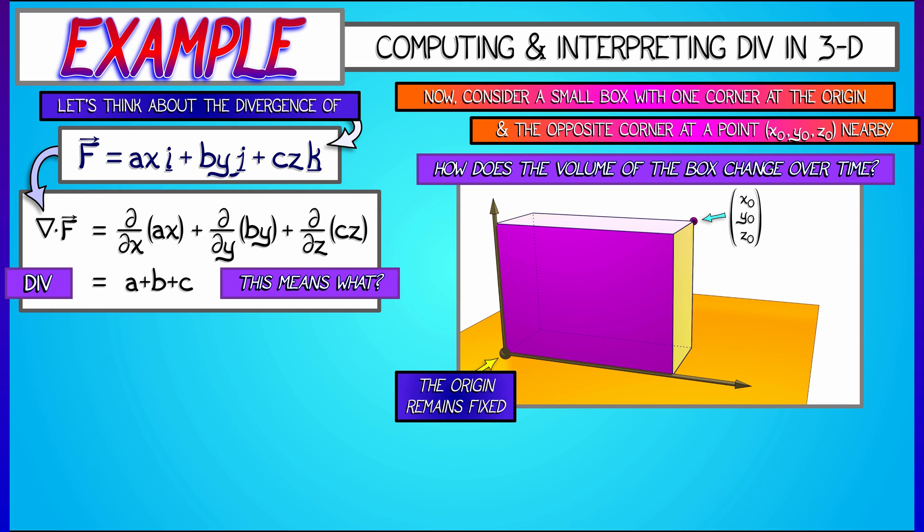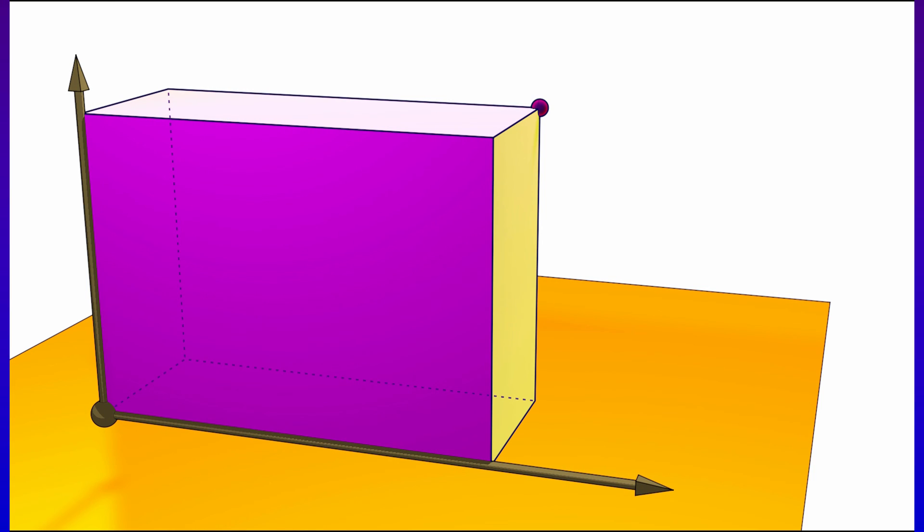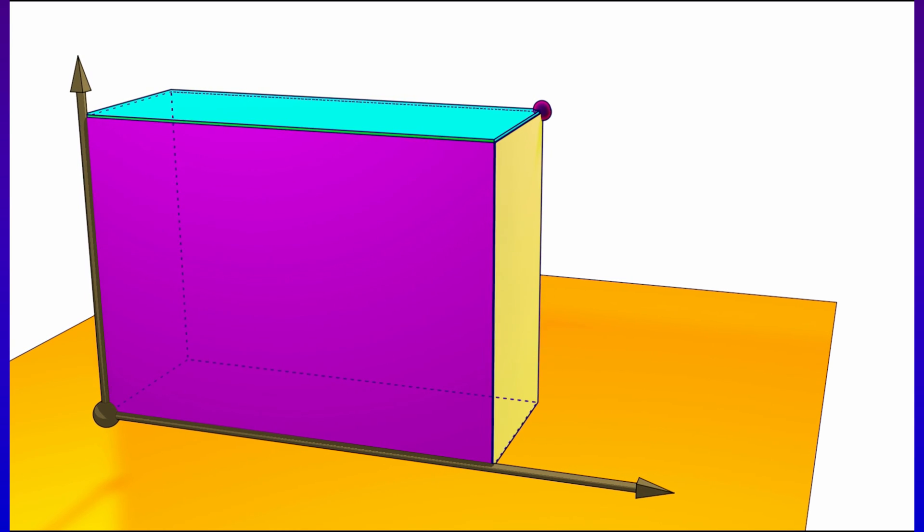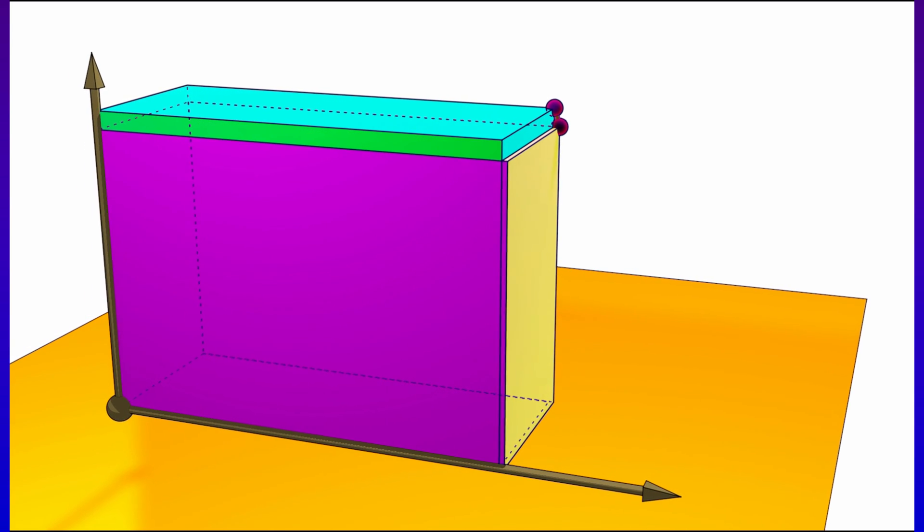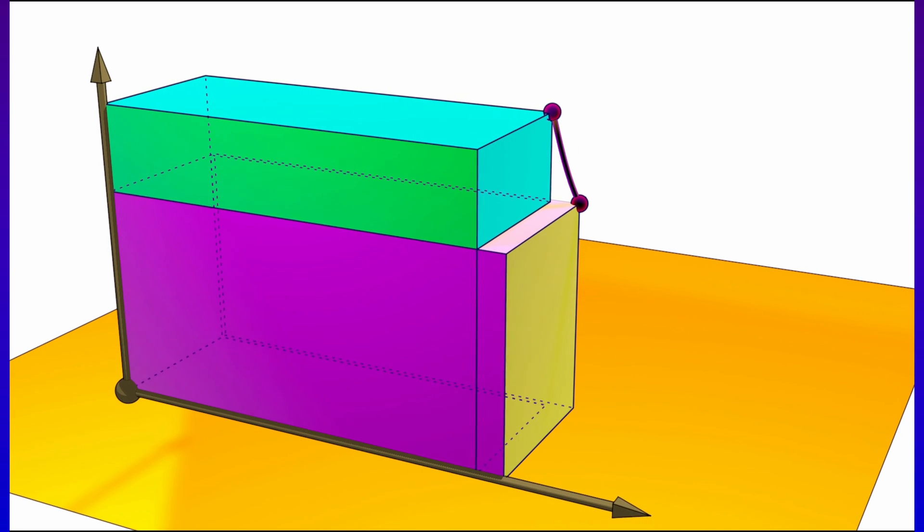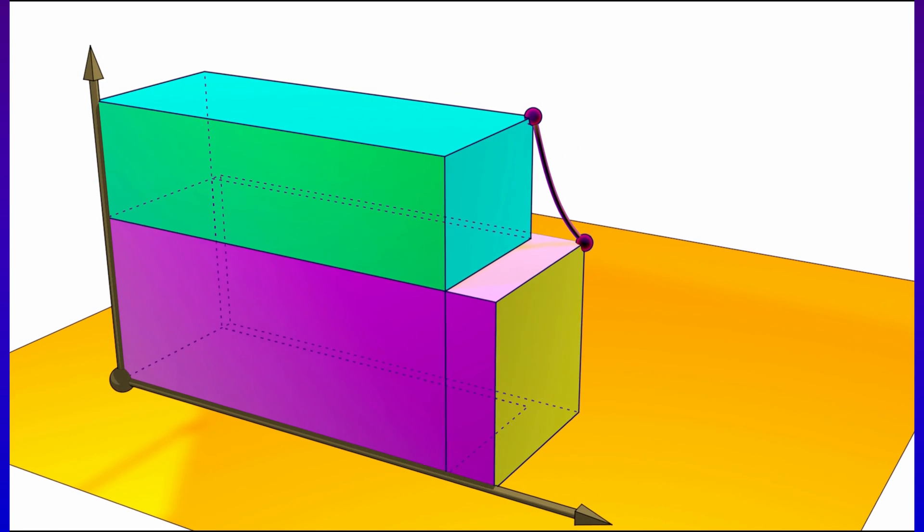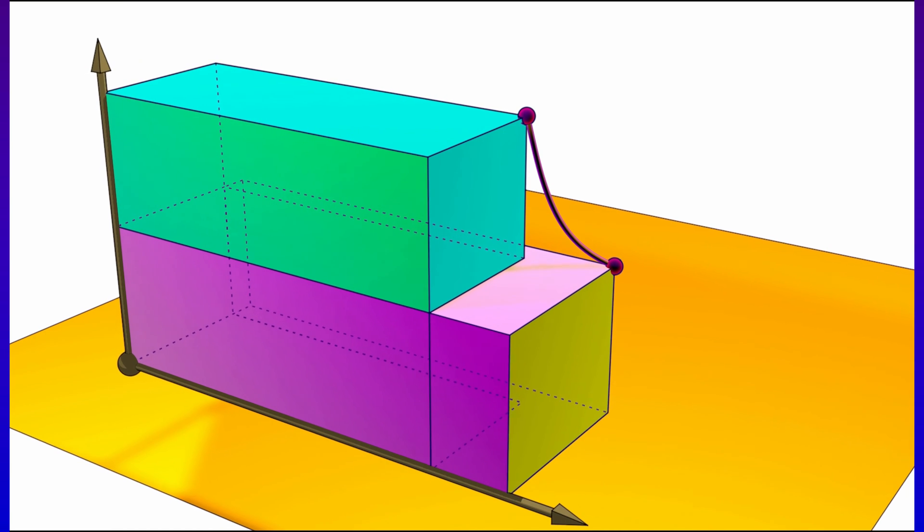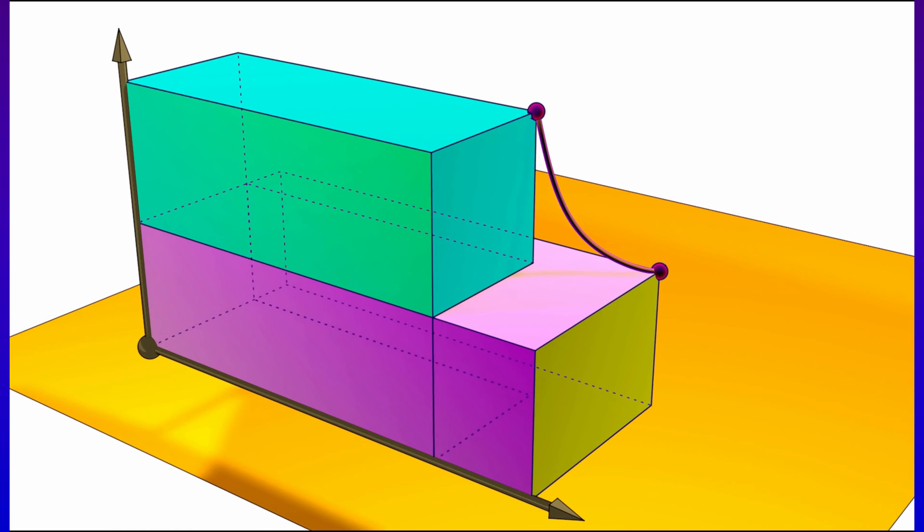Well, the origin certainly remains fixed, but that opposite corner is evolving. It's being pushed along by the vector field. How that evolves is going to depend certainly on these constants a, b, and c, but the length might be stretching or contracting and the width might be increasing or decreasing and the height might be increasing or decreasing depending on these. That volume is going to evolve.